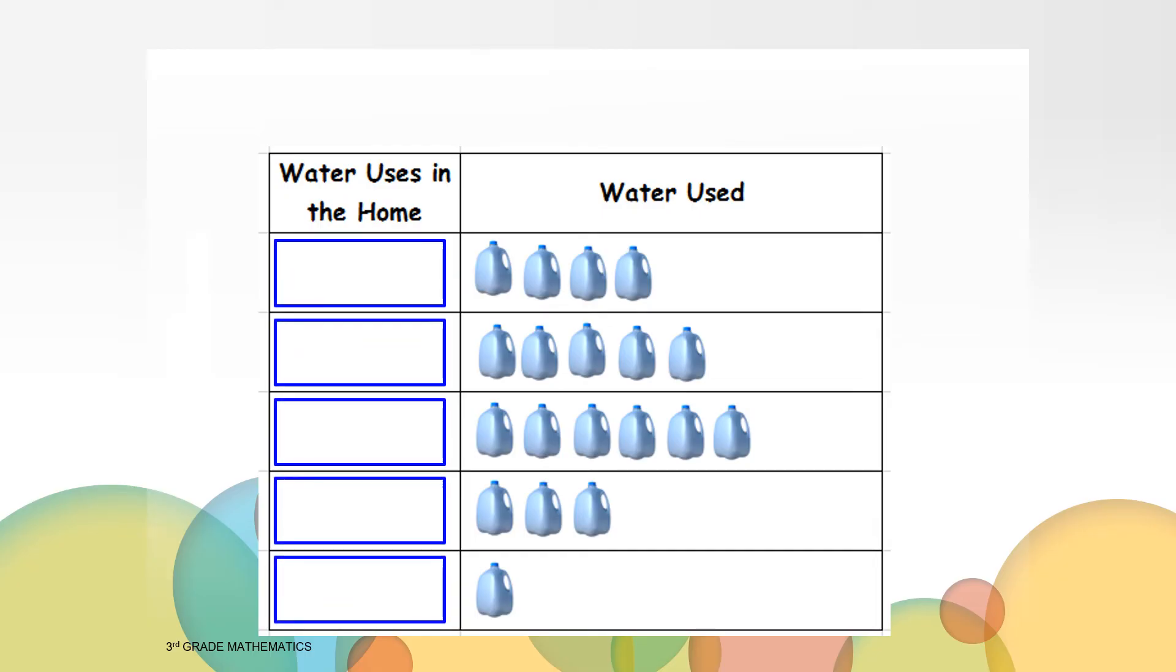How many are there? Yes, there are five subheadings. Now think about how you use the water in your home. Take a moment and write down what you think the five subheadings might be based on the title Water Uses in the Home.